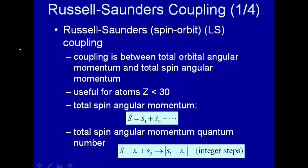The other way was to first take all the intrinsic spins of the electrons and couple them, then take all the orbital angular momenta and couple them, and then interact that sum of the intrinsic spin and the orbital angular momentum. That was called Russell-Saunders coupling, and that's what we're going to consider here.